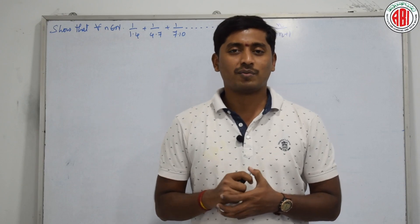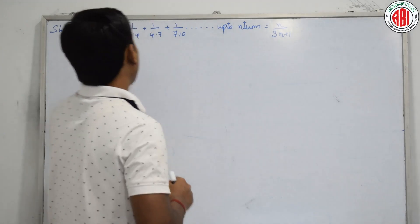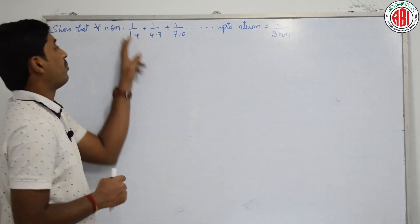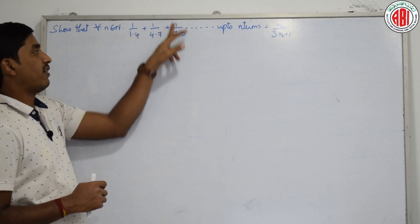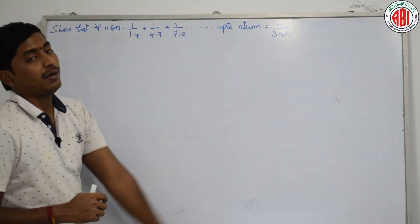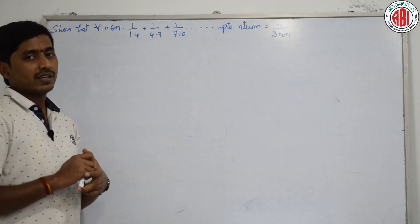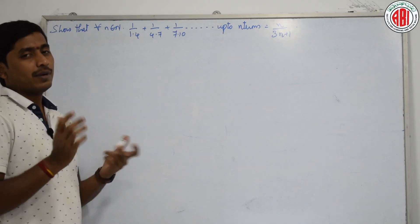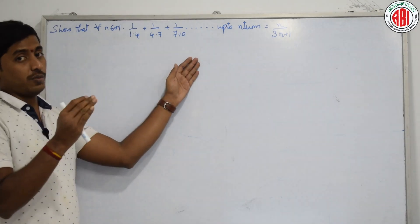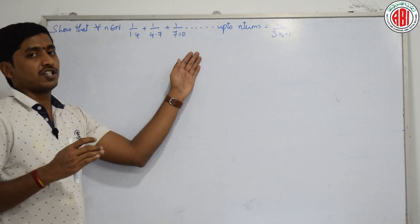Shall we do a few more problems of the same kind? The next question asks us to show that 1/(1·4) + 1/(4·7) + 1/(7·10) and so on up to n terms is equal to n/(3n+1). It is similar to the last problem, but the only difference is whatever the terms we have were only in the numerator, whereas here we have everything in terms of fractions.